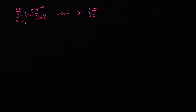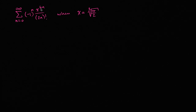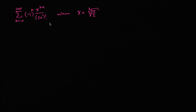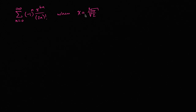I have an infinite series here: the sum from n equals zero to infinity of negative one to the n power, times x to the sixth n, over two n factorial. My goal in this video is to evaluate this power series when x is equal to the cube root of pi over two.